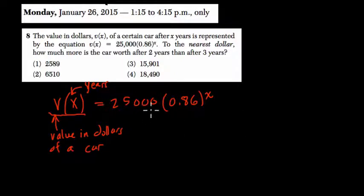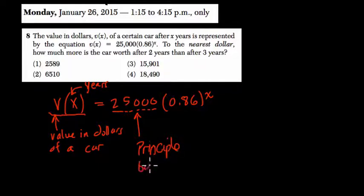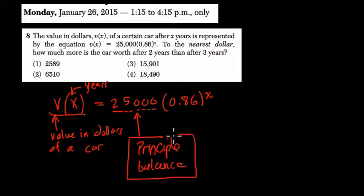The structure of this is an exponential equation. So this number right here is the principal balance. In other words, that's the starting value of the car. The principal balance or starting value of the car. Maybe starting value is a better way to say that, but I typically call it the principal.